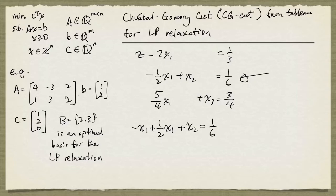I'm going to bring this 1/2 x1 to the other side, so I get negative x1 plus x2 equals 1/6 minus 1/2 x1. But we know that x1 is non-negative, so this is at most 1/6.